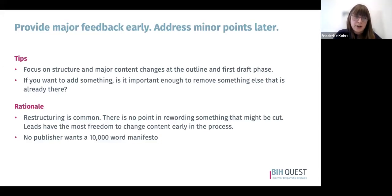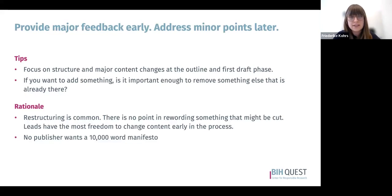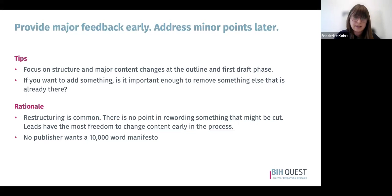Try to provide major feedback earlier and address minor points later. During the outline and first draft phases, focus primarily on changes related to structure and major content. Restructuring occurs commonly during early writing phases, so there's no point spending time rewording text passages that might be cut. In early stages, leads have the most freedom to change structure and content. Always consider whether information you want to add is important enough to remove something already there — keep in mind that no publisher wants a 10,000-word manifesto.